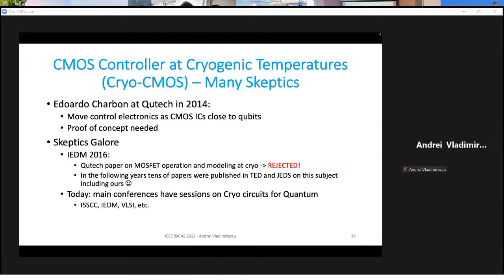And as you can see here, skeptics galore. Some of the physicists working with us asked why do you need this? It works very well with the standard instrumentation that we have today. It was going so far that when we first wanted to publish a paper about CMOS control chip at IEDM 2016, the paper was rejected. But look today, today you have cryo-CMOS sessions at many of the conferences. So the major conferences, you'll always see a session on cryogenic CMOS.